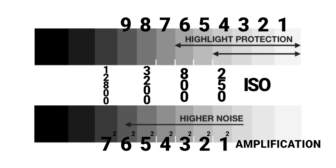Lower contrast scenes generally do not need much highlight protection, so you can potentially go as low as 320 ISO to fully take advantage of its noise floor benefits. This is the tricky part though — the rub. As you go down the ISO to take advantage of the lower noise floor, you are hindering the highlight clipping protection. Conversely, going up the ISO will increase the unfiltered amplification and overall noise levels, especially in darker, already noisier portions of the scene as they become brighter and noise becomes more visible. This is the trade-off you have to keep in mind as you set your optimal ISO level.